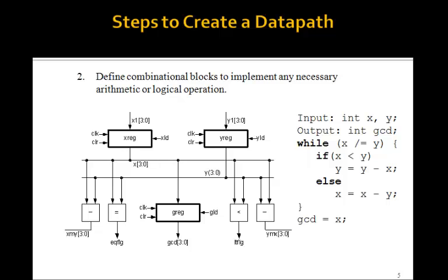Step two is to define combinational blocks to implement any necessary arithmetic or logic operations. So for example, in the algorithm, we have x not equal to y. So we'll make an equality detector here called equal, in which the inputs will be x and y, and the output will be an equal flag, which will be 1 if x is equal to y, and 0 if x is not equal to y. This equal flag will be sent to the control unit.